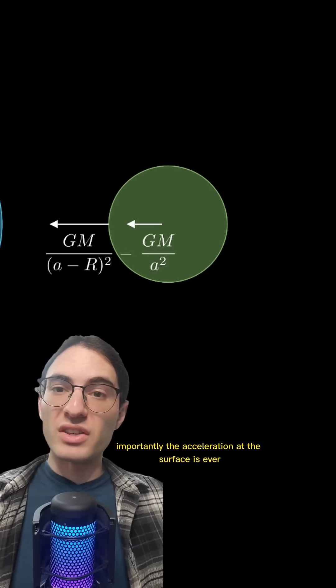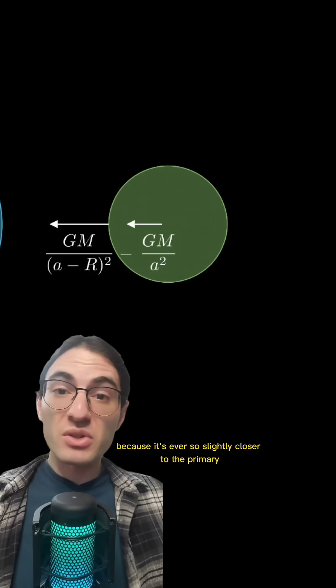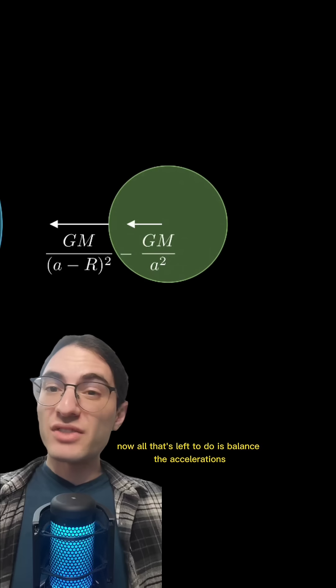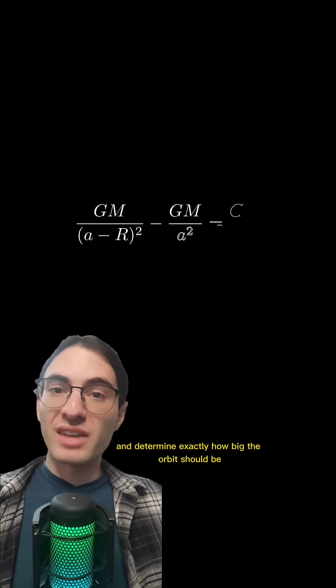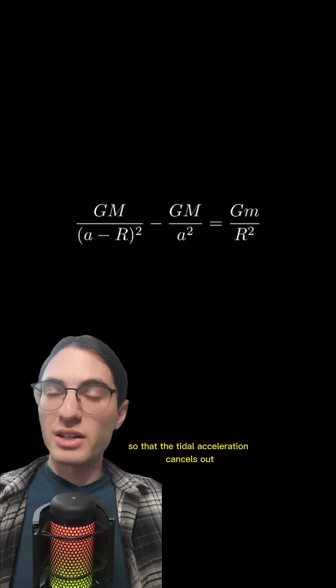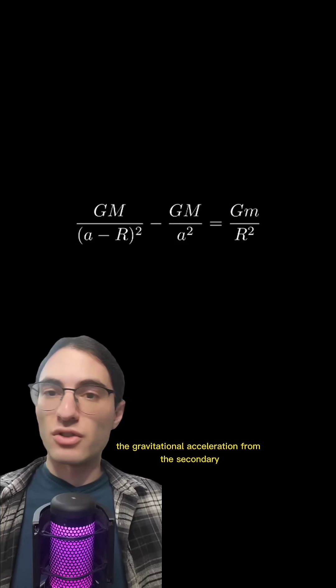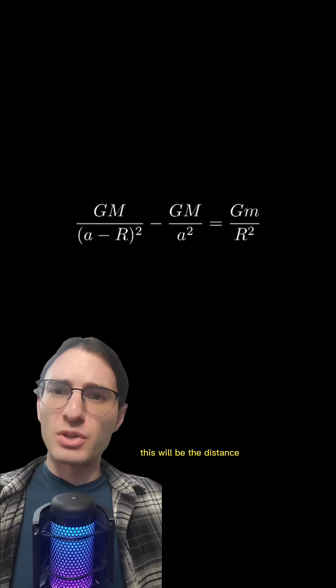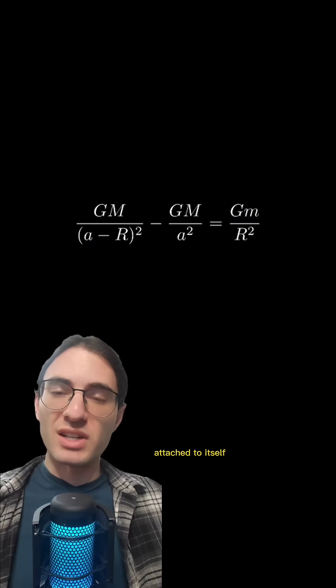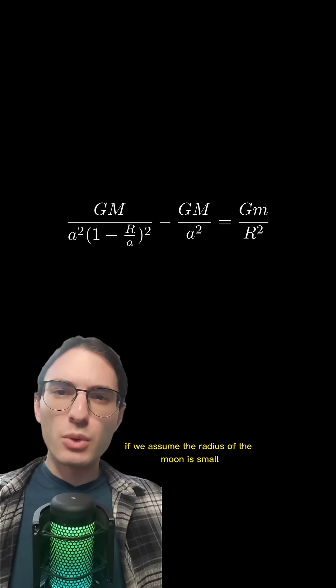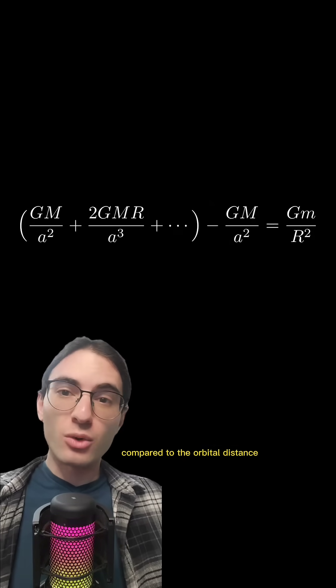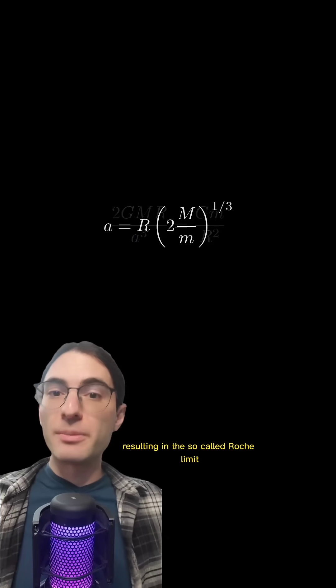Now all that's left to do is balance the accelerations and determine exactly how big the orbit should be so that the tidal acceleration cancels out the gravitational acceleration from the secondary. This will be the distance at which the moon can't keep its own surface attached to itself. If we assume the radius of the moon is small compared to the orbital distance, we can solve for the orbital distance resulting in the so-called Roche limit.